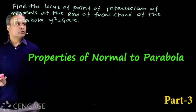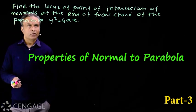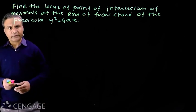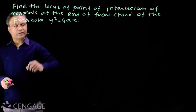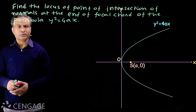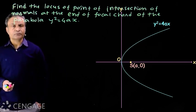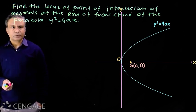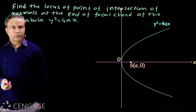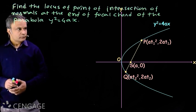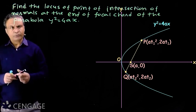Let's start this question: find the locus of point of intersection of normals at the end of a focal chord of the parabola y² = 4ax. We have the standard equation of the parabola. The graph of this parabola has focus S with coordinates (a, 0). We can draw infinite number of chords through the focus; these chords are called focal chords. Here PQ is one of the focal chords.